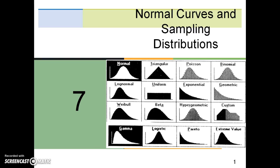Chapter 7 is on Normal Curves and Sampling Distributions. The graphic here shows several different types of distributions. However, for the purpose of Chapter 7, our focus will be on the normal distribution.